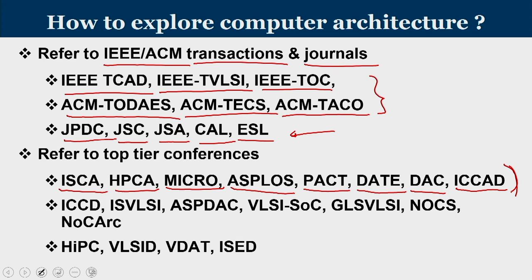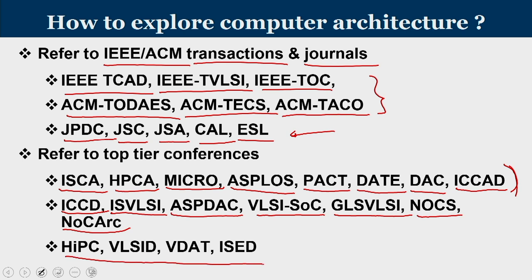Next-tier conferences include the Conference on Computer Design, the International Symposium on VLSI, Asia South Pacific Design Automation Conference, VLSI System on Chip Conference, Great Lakes Symposium on VLSI, Network on Chip Symposium, and Network on Chip Architecture Workshop — all offering reasonably good research material. For the Indian community, conferences located in Indian cities include High Performance Computing, VLSI Design, VLSI Design and Test, and the International Symposium on Electronic Design. Reading articles from these proceedings and attending these conferences will give you broader exposure and the opportunity to network with researchers in this domain.